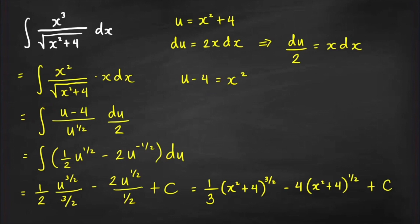The integral becomes ∫(u−4)/u^(1/2) · (du/2), which simplifies to (1/2)∫(u^(1/2) − 4u^(−1/2)) du. Applying the power rule to each term gives (1/3)(x²+4)^(3/2) − 4(x²+4)^(1/2) + C.